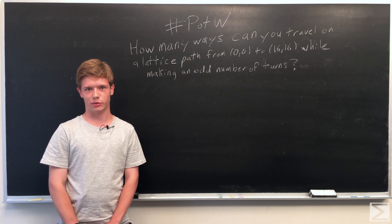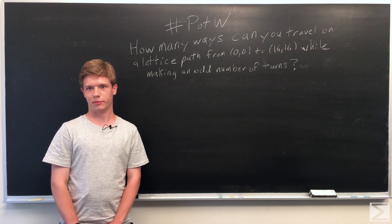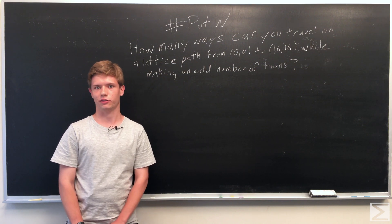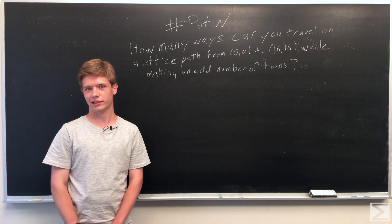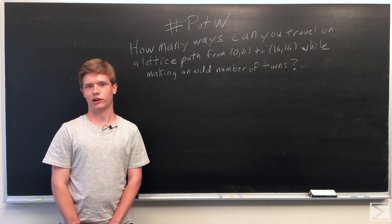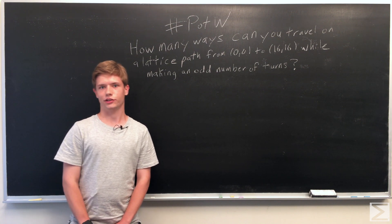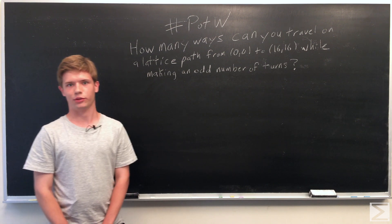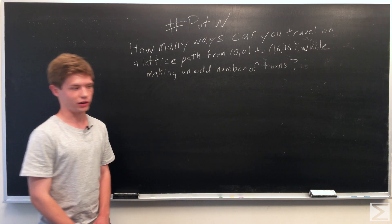To make an odd number of turns, the first step and the last step have to be in different directions. So if we start going right, we have to go up for our last step; if we start going up, we have to go right for the last step. So there are two cases to count the number of ways that we can make an odd number of turns.